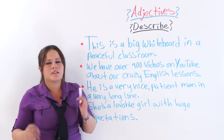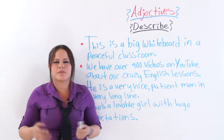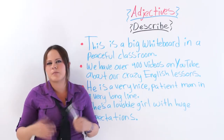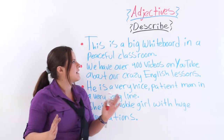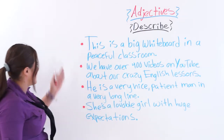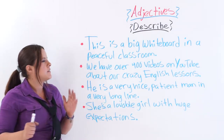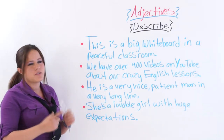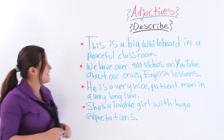An adjective describes or gives more information about a noun or a pronoun. Okay, so let's begin. I have four examples here written on the board, and you are going to help me circle the adjectives.